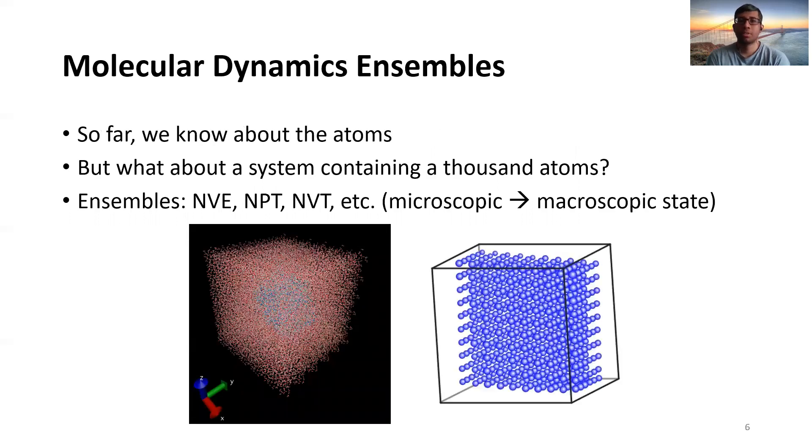As we are talking about ensembles in this lecture, so far we know only about the atoms, the atomistic scale or level of interaction. But in a system there is not only two or three atoms that we can talk about. Let's say there's a protein that is solvated in a simulation box in thousands of water molecules.